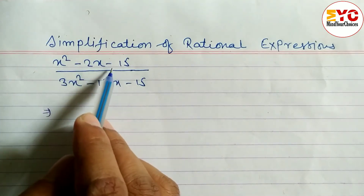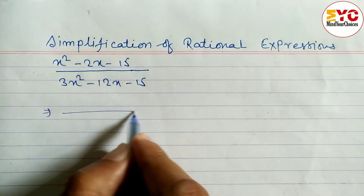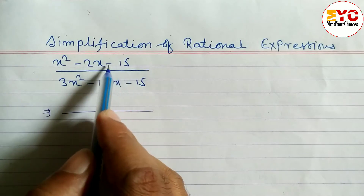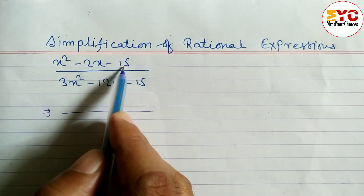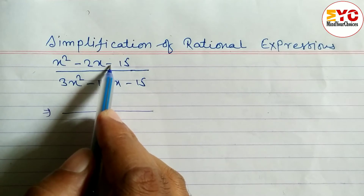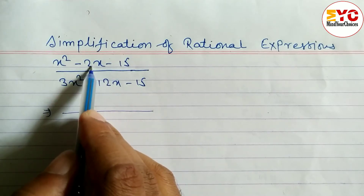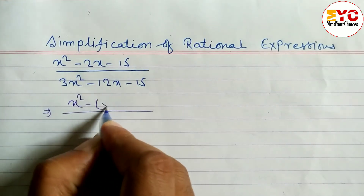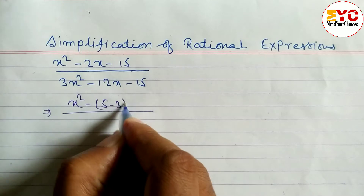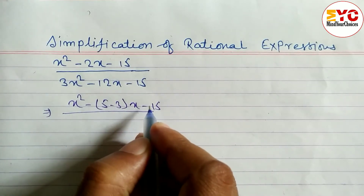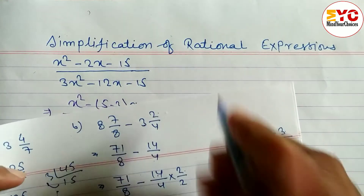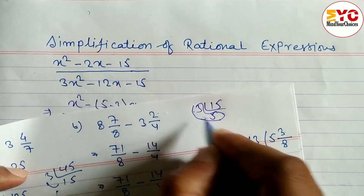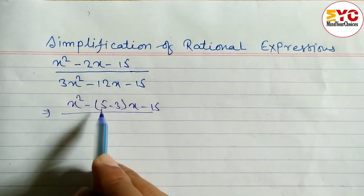Here we also learn how to factorize and take common. So you can see the last number here is 15. We have to find a factor pair whose multiplication is 15 and subtraction is 2. When you multiply you get 15, and when you subtract you get 2. What are the factors? 5 and 3.